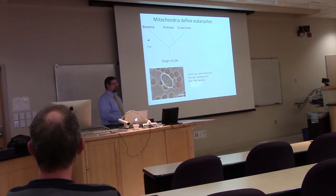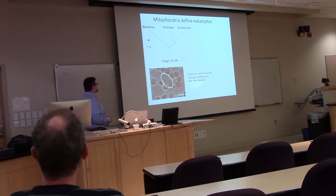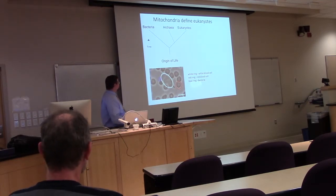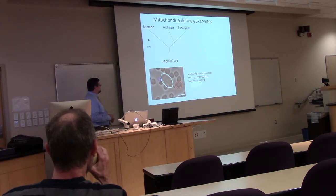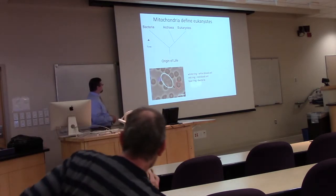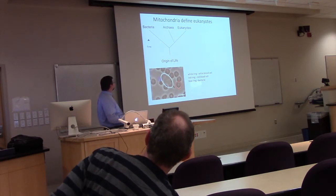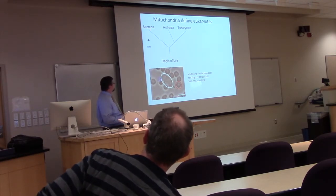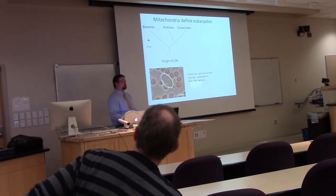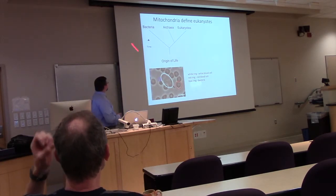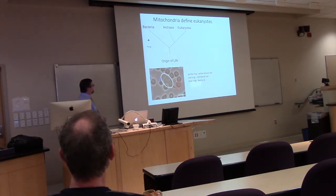Being the eclectic nature of the crowd, I would start at the beginning — in this case the origin of life. Some four billion years ago, the first cell was thought to arise in a membrane-bound compartment. Many evolutionary biologists believe that cell went on to generate the three kingdoms of life we know today: bacteria, archaea, and eukaryotes.